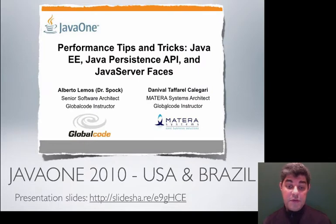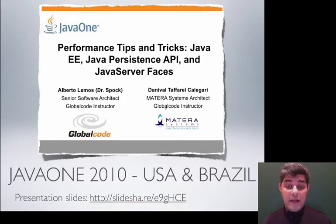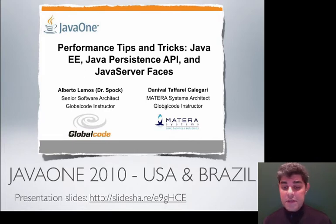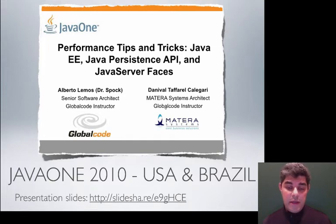In 2010 we attended JavaOne in San Francisco and Sao Paulo, Brazil. These presentations were given in partnership with Danival Caligari. In these sessions we talked about tips, tricks, and best practices on how to develop Java EE applications using JavaServer Faces, Java Persistence API, and Enterprise Java Beans. Some aspects of application performance were also discussed.